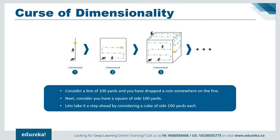To understand the curse of dimensionality in simpler terms, consider a line of 100 yards where you drop a coin — it's quite easy to find by walking on the line. This is a single-dimensional entity. Now consider a square of 100 yards; it will take more time to find the coin — a 2D entity. Now consider a cube of side 100 yards — it's even more difficult, a 3D entity. You can observe that complexity increases as dimensions increase. In real life, high-dimensional data has thousands of dimensions, making it very complex to process. High-dimensional data is commonly found in image processing, natural language processing, and image translation.